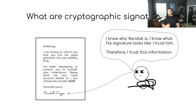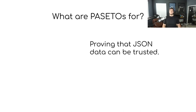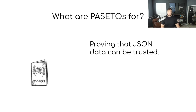If that makes sense, that's essentially the same thing happening with JSON data. PASETOs are used for proving that some JSON data can be trusted — that's really the main use case. Despite all the other things we'll cover today, that is their purpose. The best way to think about it, going back to the cryptographic signature analogy, is sort of like a passport.